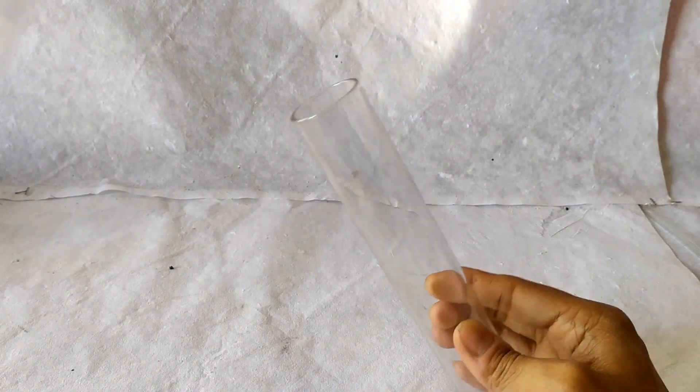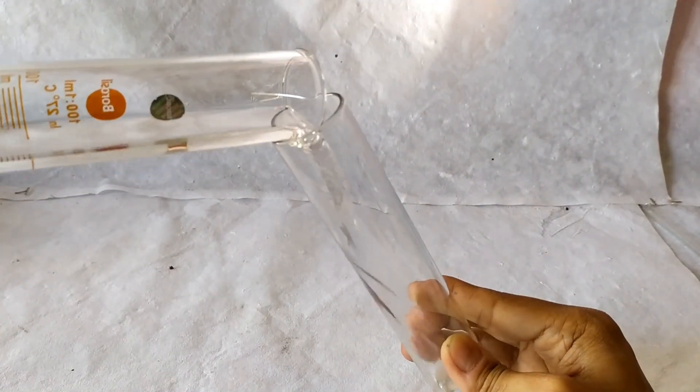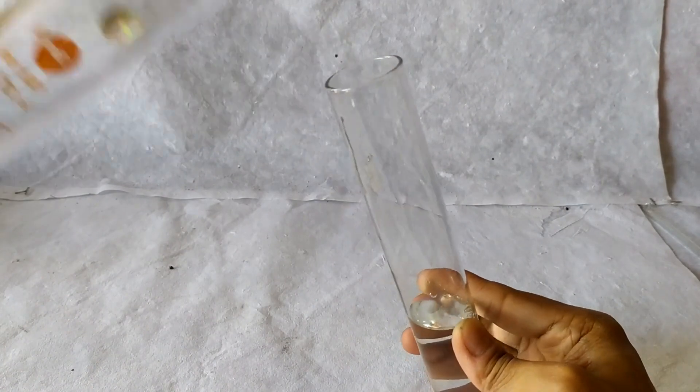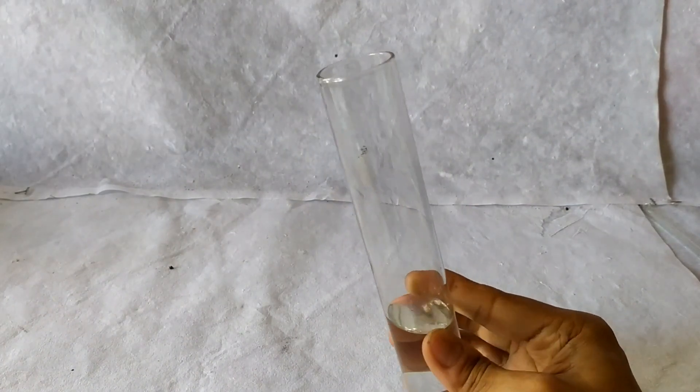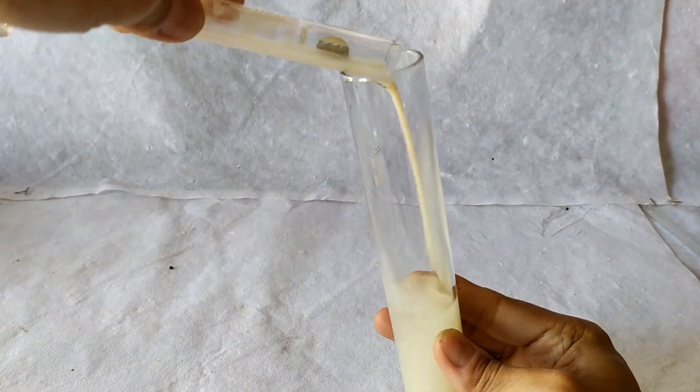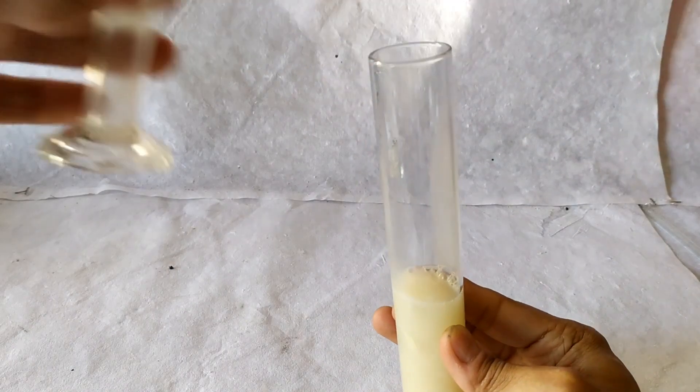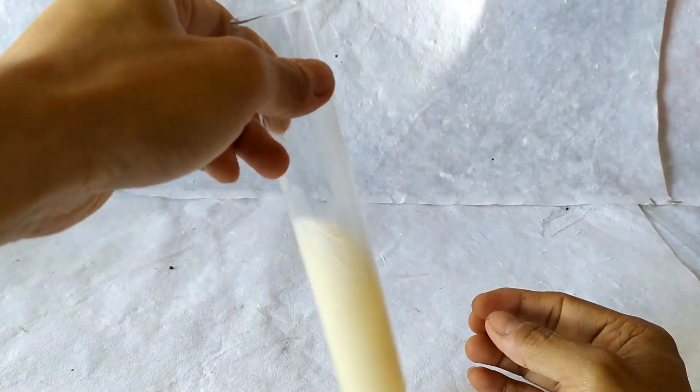Take the glucose solution and the yeast suspension in a 5 to 1 ratio in the large test tube. So if you're taking 50 ml of glucose solution for example, add 10 ml of yeast suspension to it.